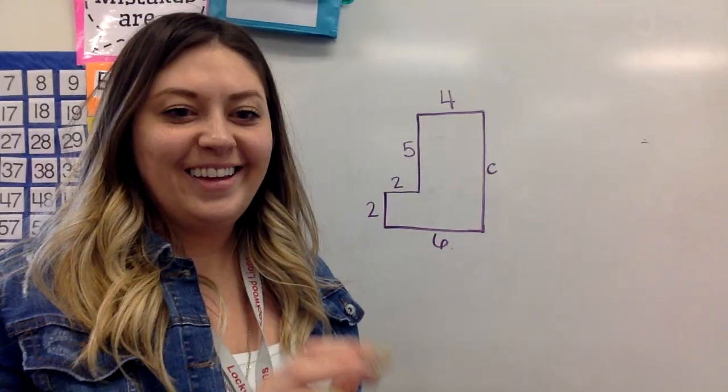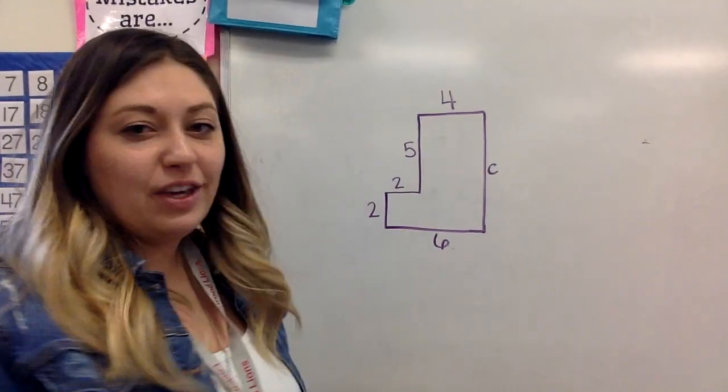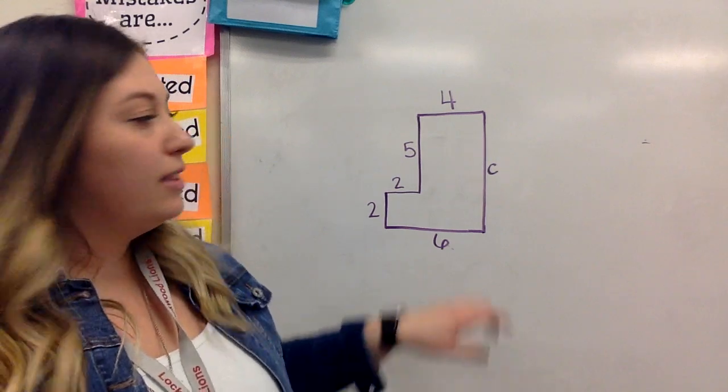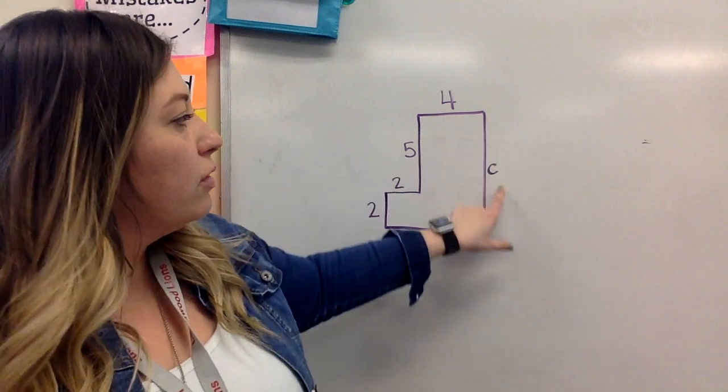Alrighty, let's do another one. Okay, so here's our next figure. This time when I'm looking for my missing side length, I see that this time it's a vertical side. It means it goes up and down.